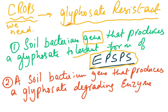So our cash crop survives while the weeds are killed. We've genetically engineered the crops to be resistant to glyphosate either by inserting a gene for a glyphosate-tolerant form of EPSPS or a gene that produces a glyphosate-degrading enzyme. The result is better crop yield, more food, and more income — this is called herbicide resistant crops.